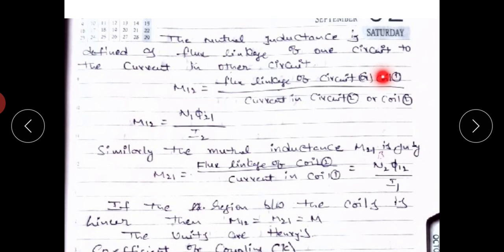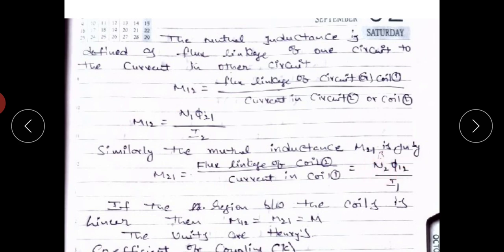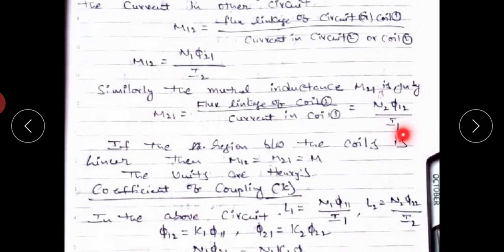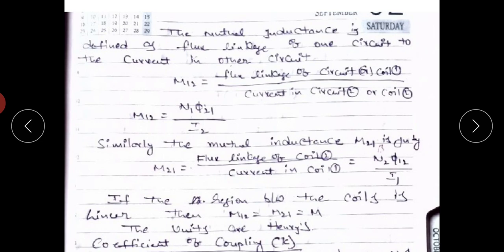M12 equals N1 times φ21 divided by I2, where φ21 is the second coil flux that links with the first coil, and I2 is the second coil current. Similarly, M21 equals the flux linkages of coil 2 divided by the current in coil 1, which gives N2 times φ12 divided by I1. Here φ12 is the magnetic flux produced by current I1, and φ21 is the magnetic flux produced by I2.